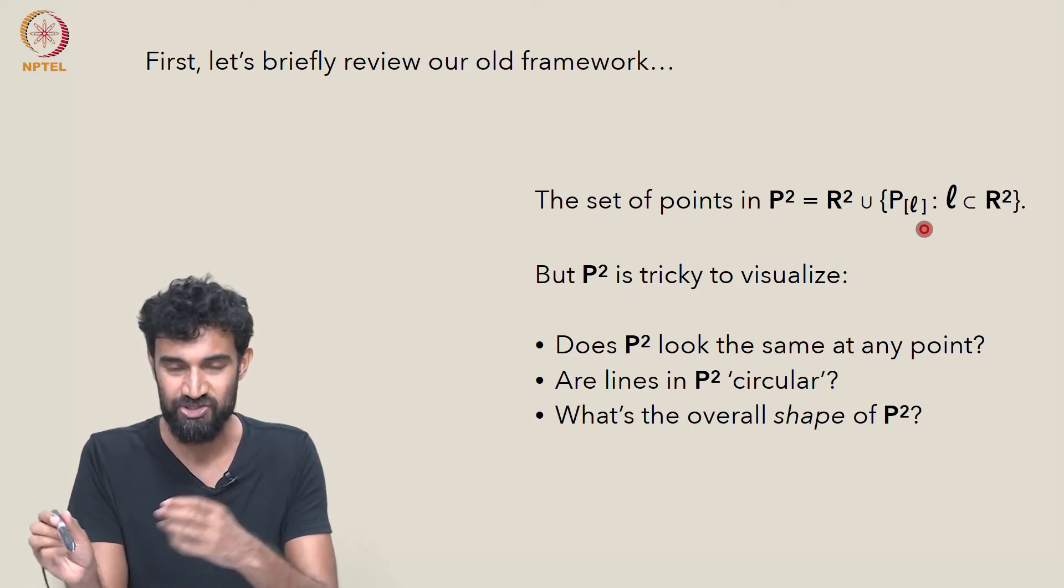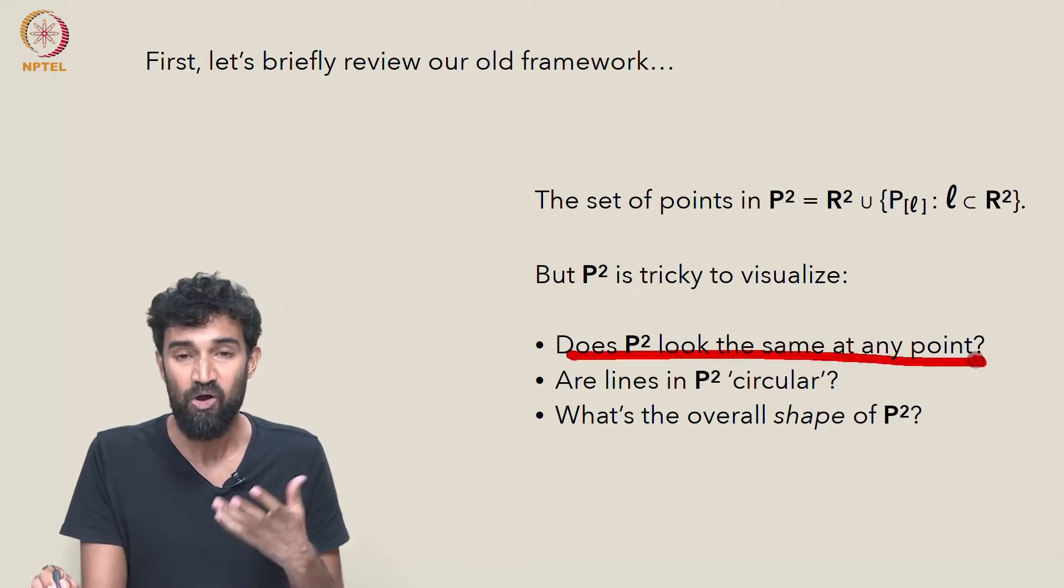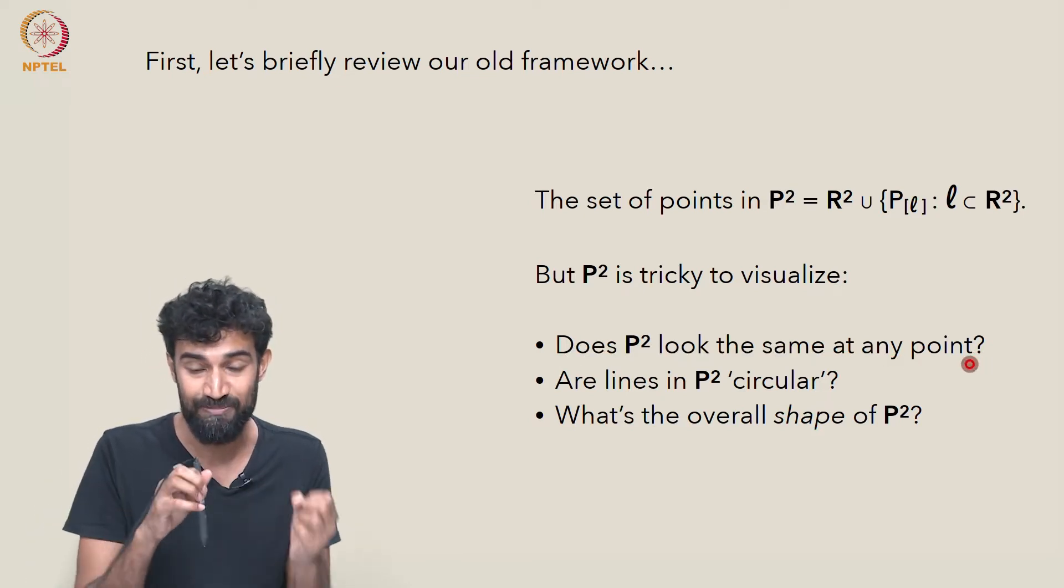And we have these points at infinity that we've added on. So it looks like these could somehow be different from each other. They might have different structures or different properties. It's not clear that they all have the same properties or whether P² looks the same from any point.